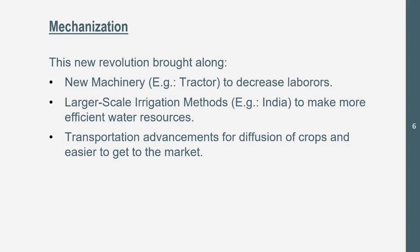Then we got mechanization. This new revolution brought along three main things: new machinery like the tractor, which decreases the need for laborers and makes the farming job a lot easier; larger-scale irrigation methods, especially in India, to make more efficient use of water resources; and transportation advancements for diffusion of crops, making it easier for stuff to get to the market. This allows people to actually live farther away from markets in urban areas.